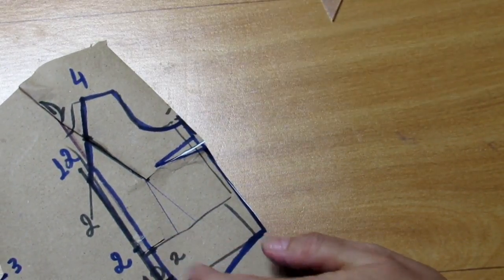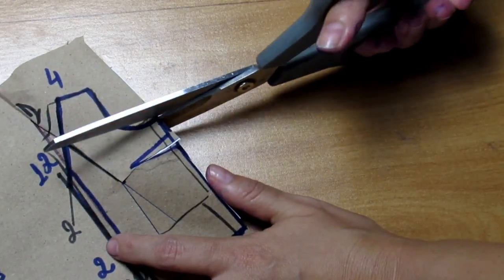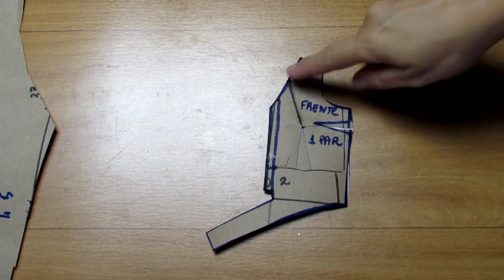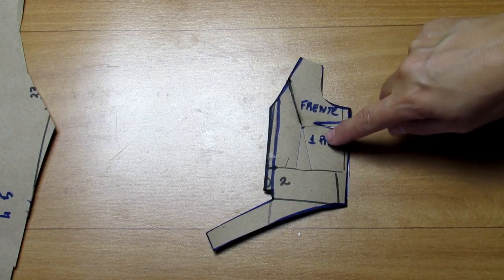Now just cut out the pattern. The front part is ready - this whole outline. It will be cut as a pair and will have the button overlap at the center front.